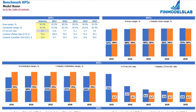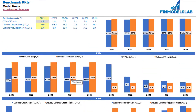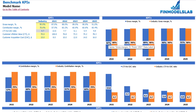On the benchmark KPI tab, you may see industry benchmark KPIs and compare them with numbers generated by the model. You have gross margin percentage, contribution margin percentage, LTV-to-CAC ratio, customer lifetime value and customer acquisition cost. In the yellow cells, you set up your average industry benchmark. In the white cells, you see the numbers calculated by the model. On the charts, orange represents the industry-specific KPI and blue represents the value calculated by the model.